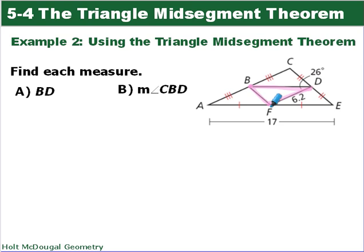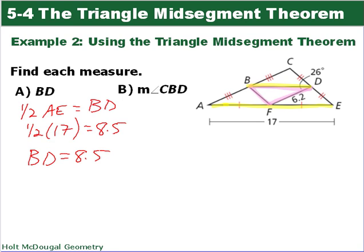So we want to find BD, the length of BD which is this right here. And our midsegment theorem says it's half as big as the side that it's parallel to which is going to be AE. So that means that BD is going to be one half. Okay, so BD is going to be half as big as AE. Since AE is 17, BD is going to be half of that or 8.5. So that's our answer. BD is 8.5.